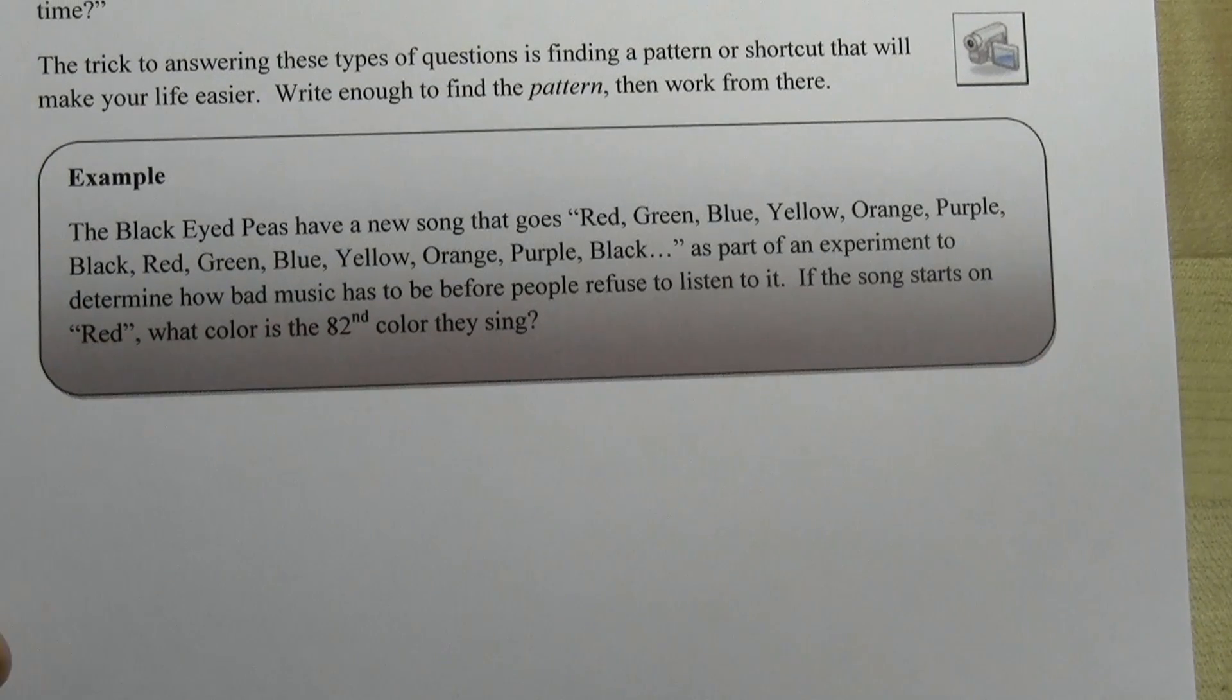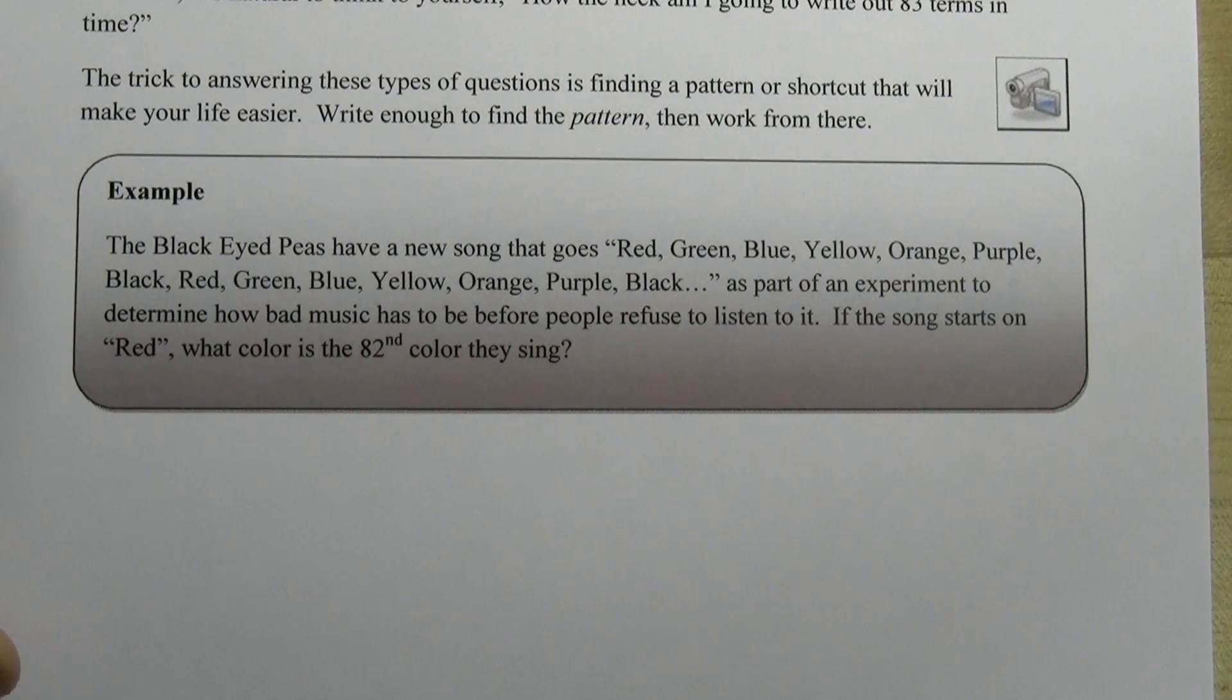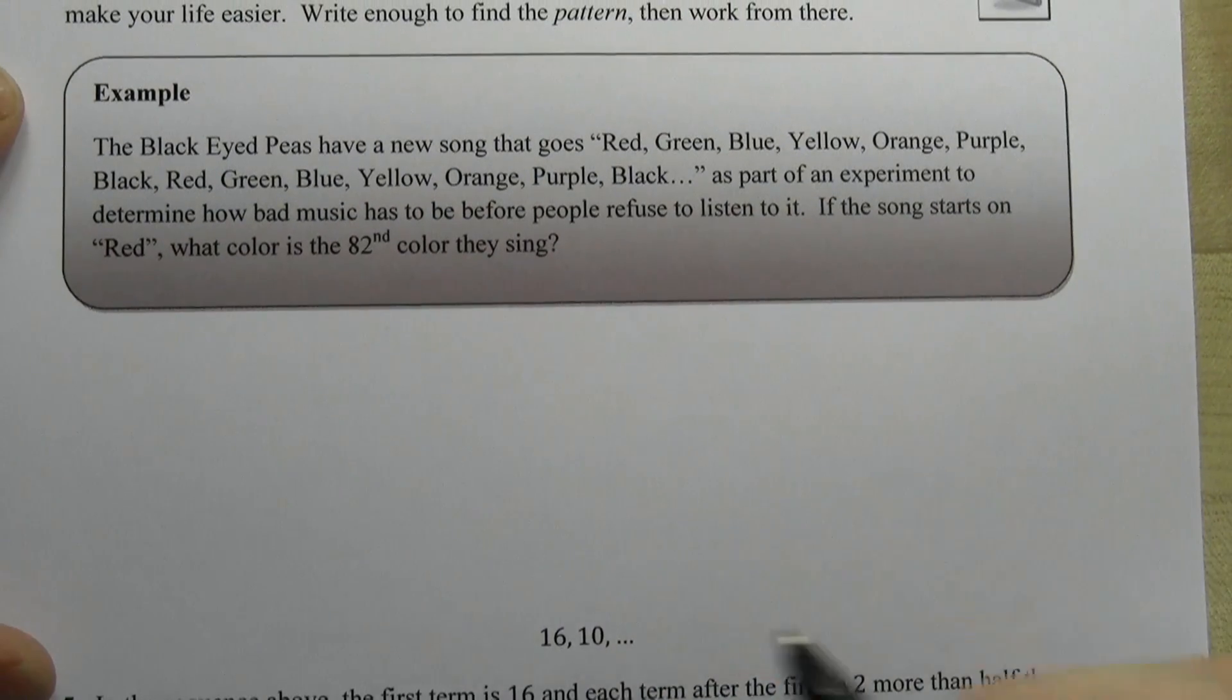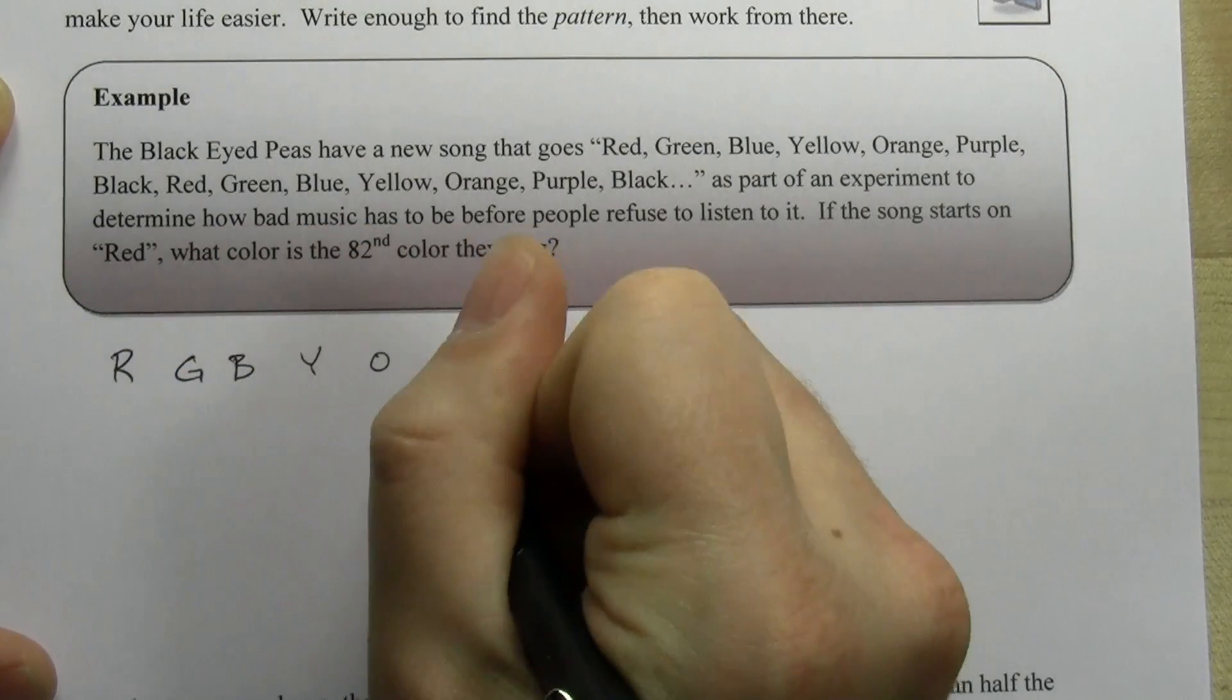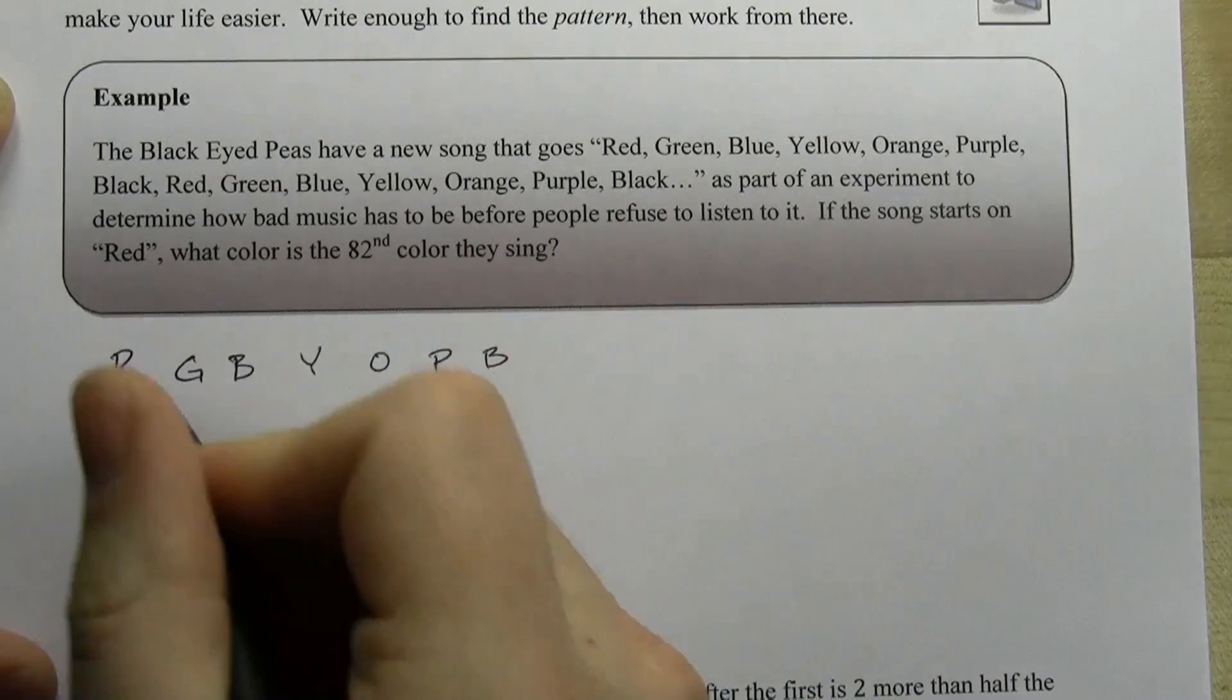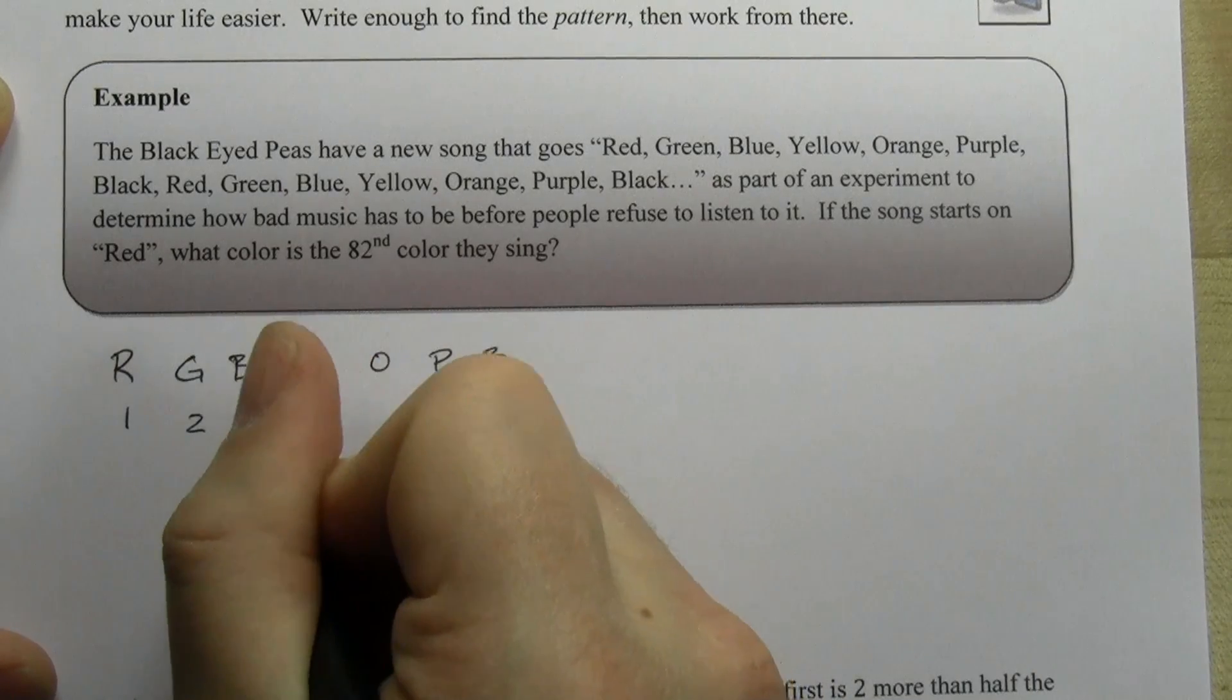Well there are two ways to solve this and I'll show you both methods. You can pick the one that you like more for sequence/pattern questions. Write out the pattern, so we have red, green, blue, yellow, orange, purple, black. So the first one's red, the second one's green, and so on and so forth.